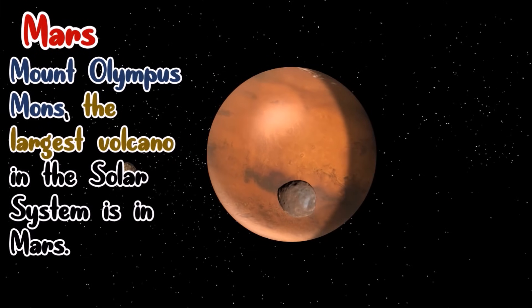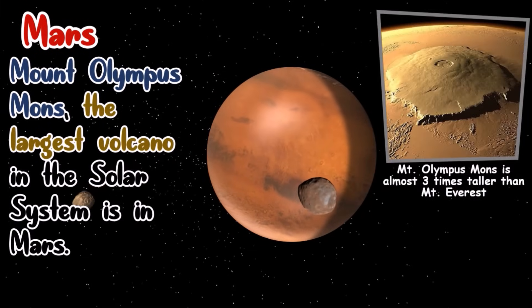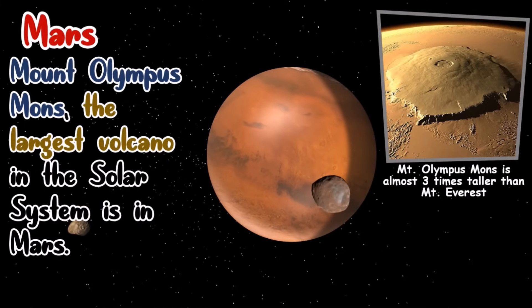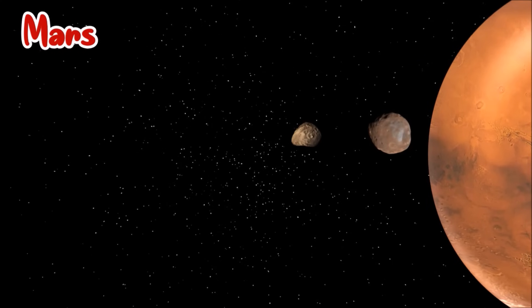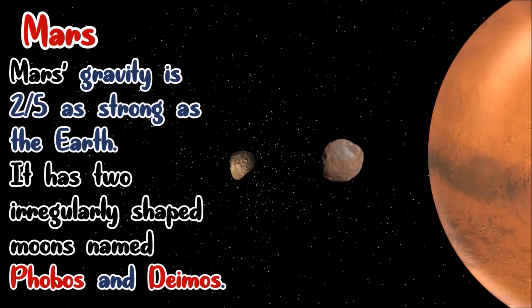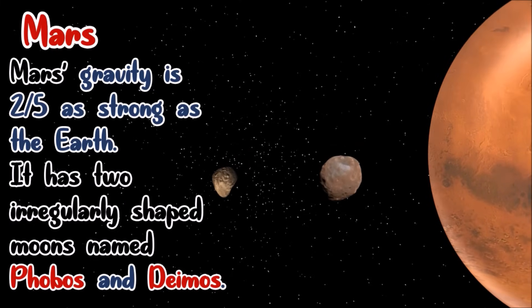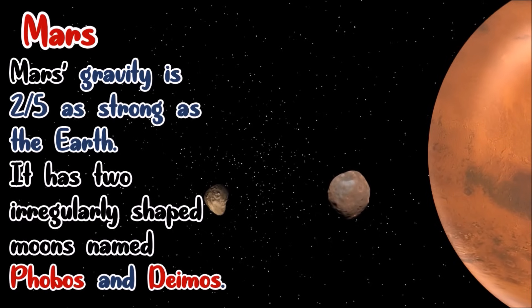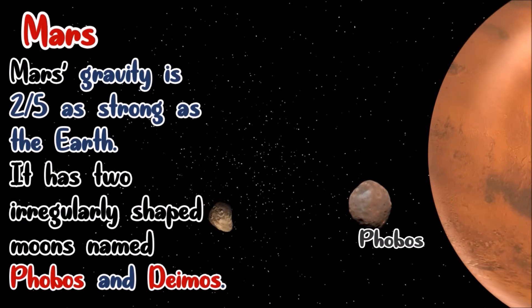The largest volcano in the solar system is also found in Mars. It is called Mount Olympus. Mars gravity is two-fifths as strong as the Earth. Mars has two irregularly shaped moons. It is called Phobos and Deimos.